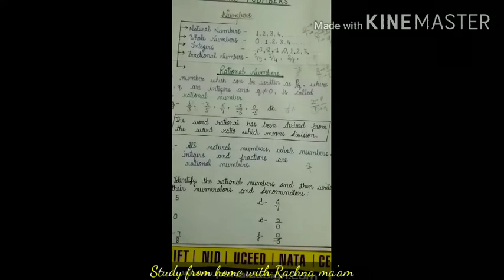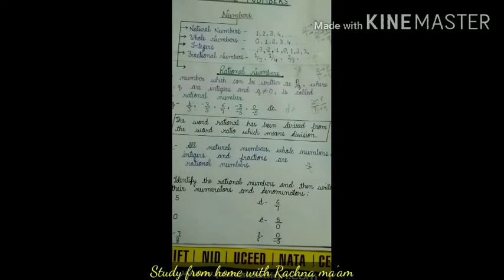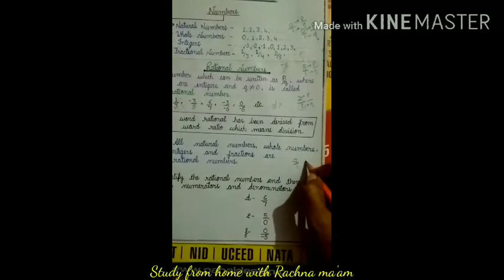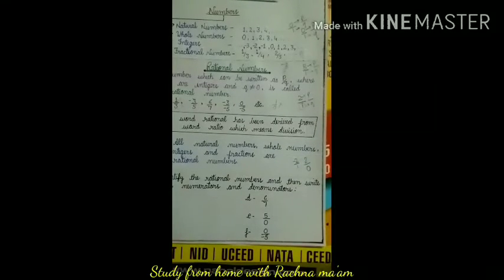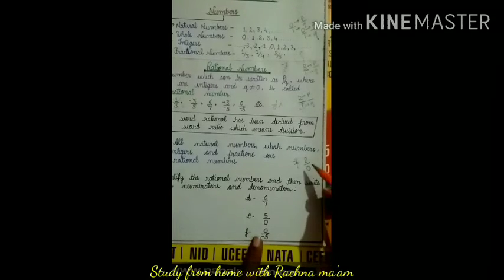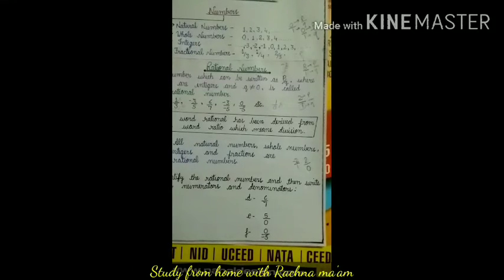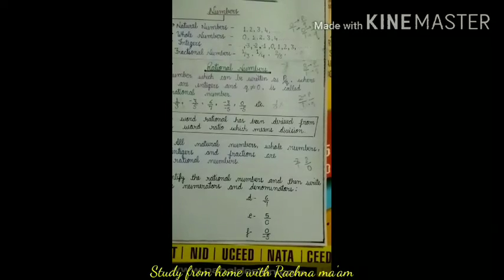Now you may ask: why can the denominator never be zero? If the denominator becomes zero, why won't it be a rational number? Listen — if you ever write zero in the denominator, it will not be a rational number, because if we divide any number by zero, the answer is meaningless. Therefore, we never write zero in the denominator. Any number with zero in the denominator cannot be a rational number.